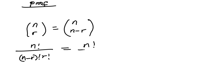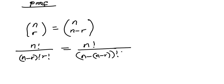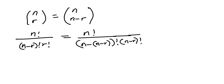The right hand side is n choose (n minus r), which is n factorial over n minus (n minus r) factorial times (n minus r) factorial. Simplifying, n minus (n minus r) gives r, so the denominator becomes r factorial times (n minus r) factorial. Step two: we bring it the same way — r factorial times (n minus r) factorial.